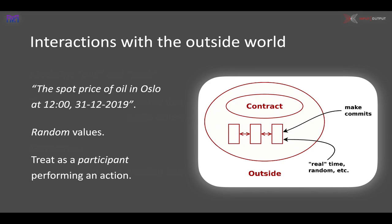We have to think about getting values from the outside world — perhaps random values, oil spot prices, or stock prices. It isn't up to the blockchain to provide those. In our model, we can think of these as another participant in the contract performing an action and providing a value, just like a human participant making a choice. This is what we call an oracle, and in Marlowe we treat them as participants.